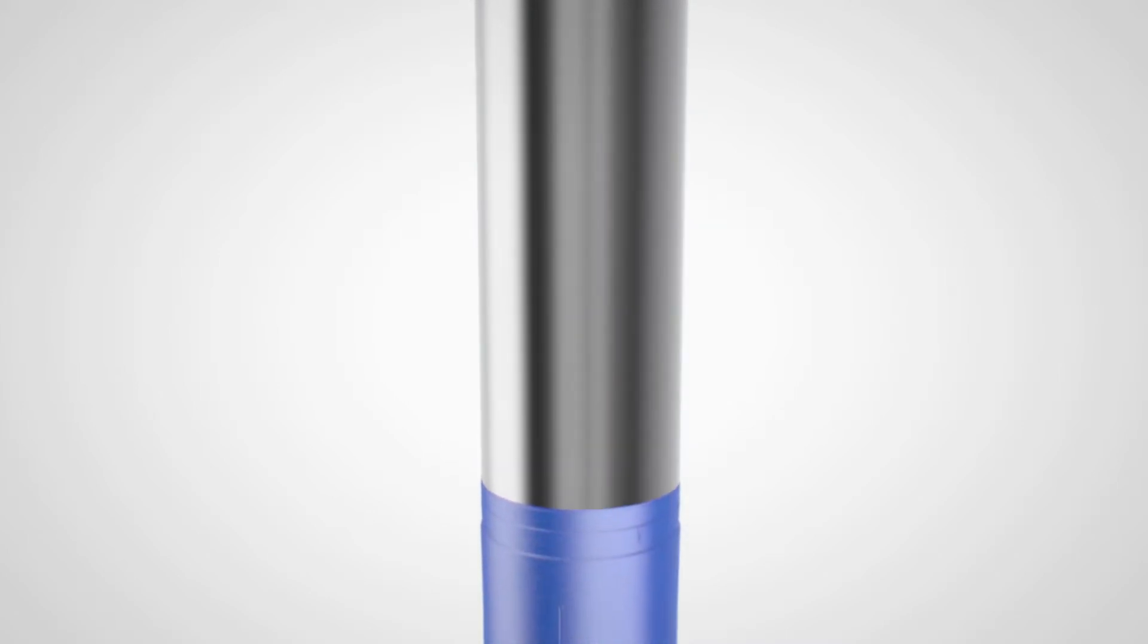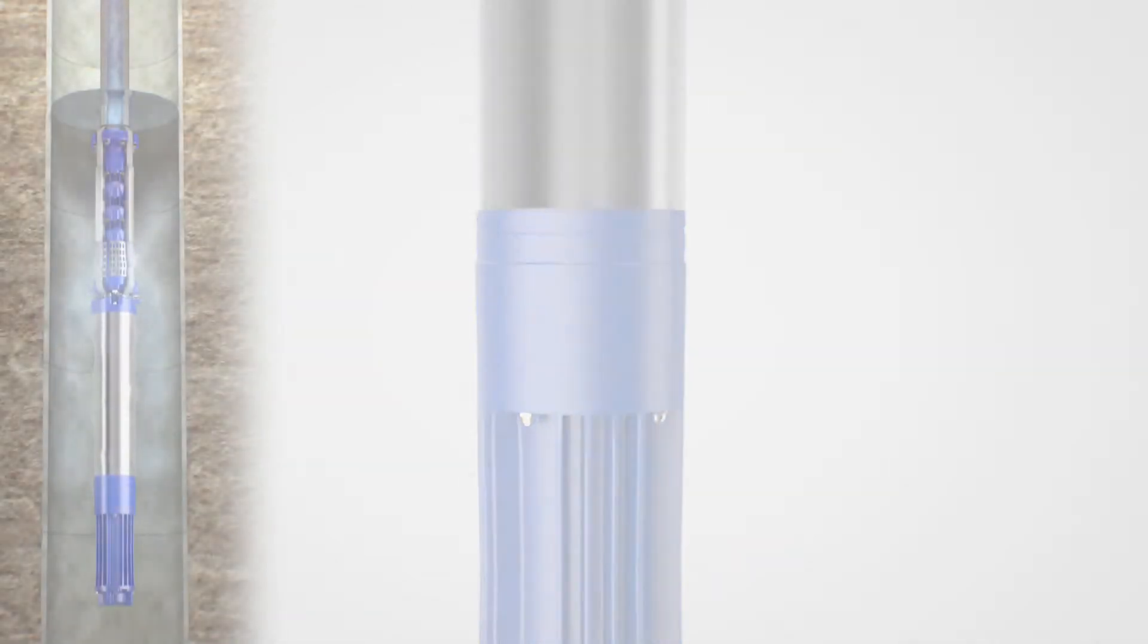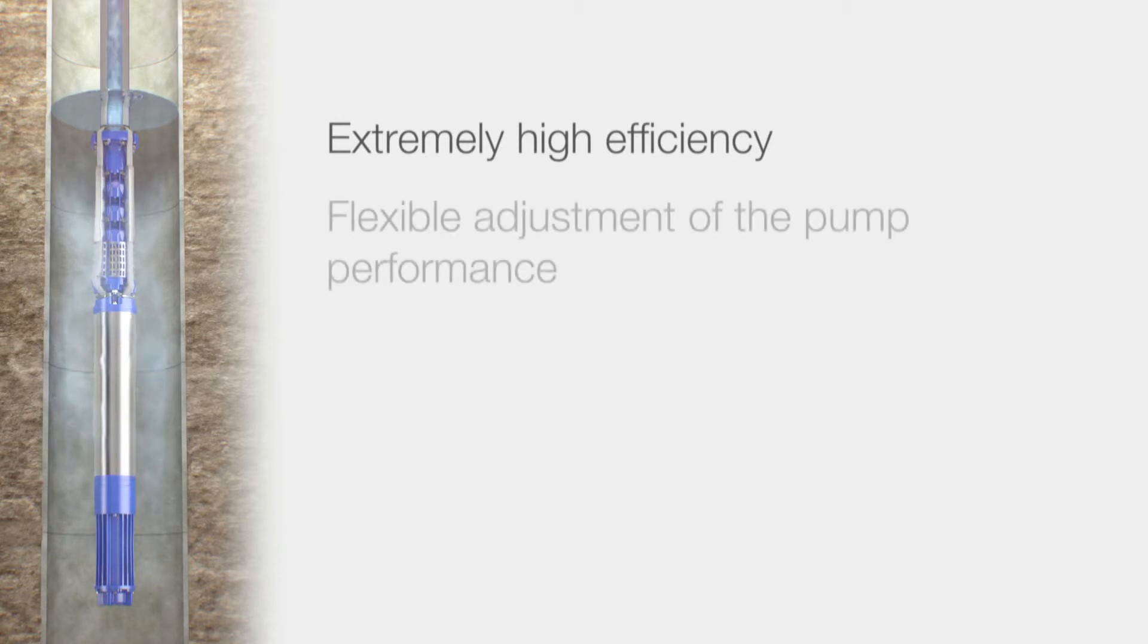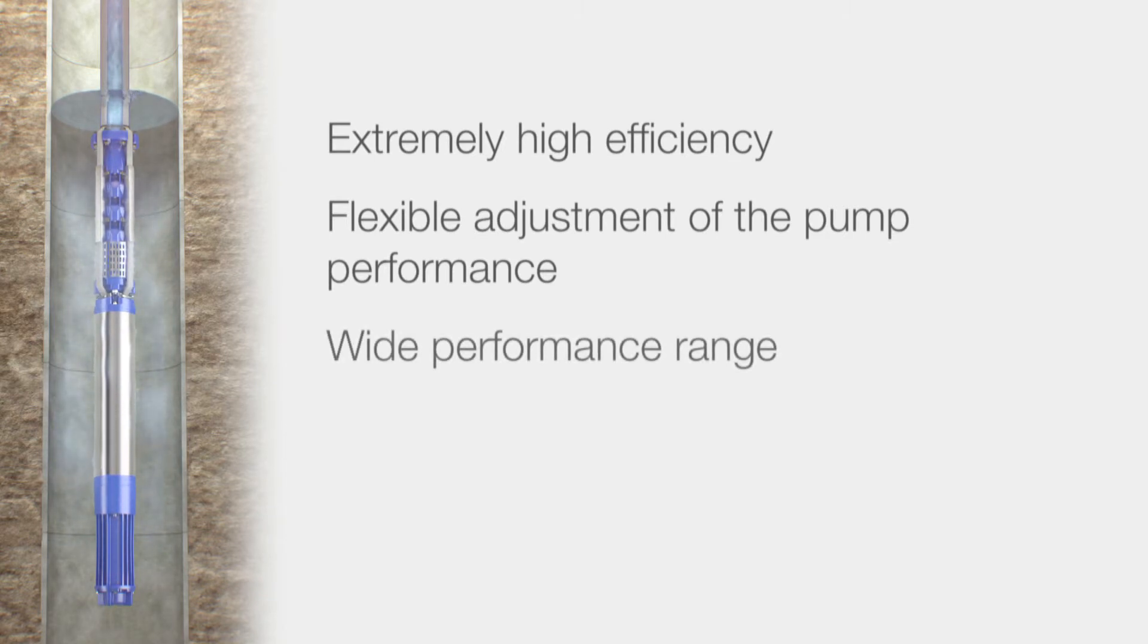IPM – The most important advantages at a glance. Extremely high efficiency with significant reduction of energy costs. Flexible adjustment of the pump performance allows avoidance of losses by throttling. Wide performance range enables loss-free use by extremely high efficiencies up into the partial load range.